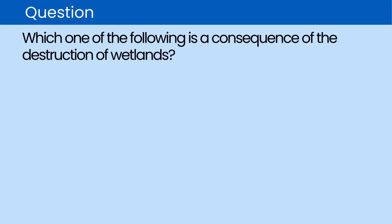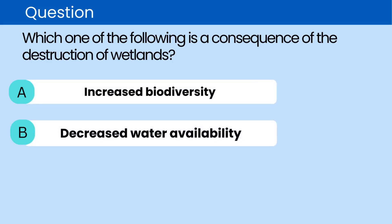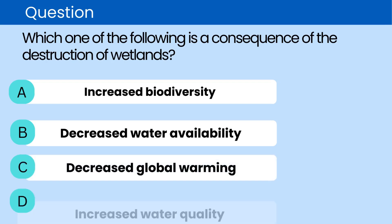Question. Which one of the following is a consequence of the destruction of wetlands? A. Increased biodiversity. B. Decreased water availability. C. Decreased global warming. D. Increased water quality.